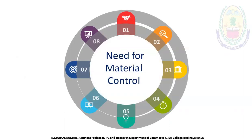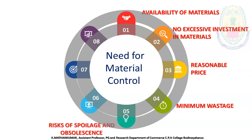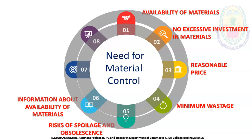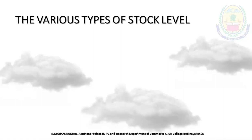The need for material control includes: ensuring availability of material, avoiding excess investment in materials or bulk dumping, maintaining reasonable prices to sell products in the market, minimizing wastage during manufacturing, reducing risk of spoilage, maintaining information about availability of material in the warehouse, preventing misappropriation of materials, and managing seasonal fluctuations.